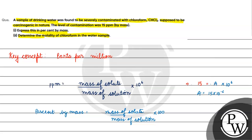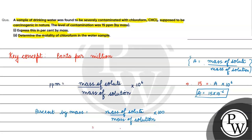So the value of capital A comes out to be 15 into 10 to the power minus 6. Capital A was mass of solute by mass of solution, which equals 15 × 10⁻⁶. Therefore, percent by mass equals 15 × 10⁻⁶ × 100 = 15 × 10⁻⁴ percent, which can be written as 1.5 × 10⁻³ percent.